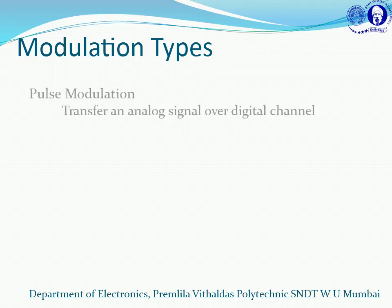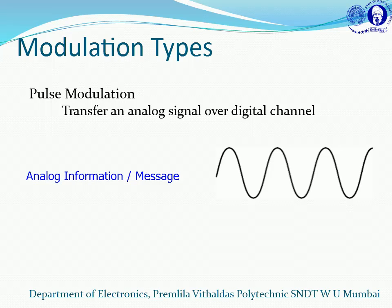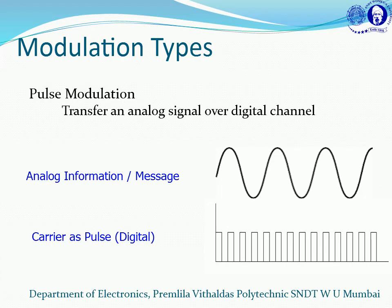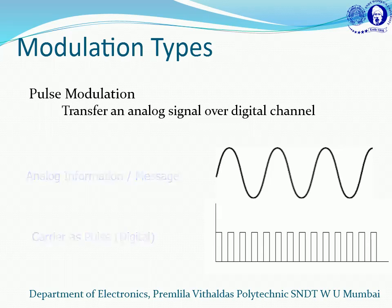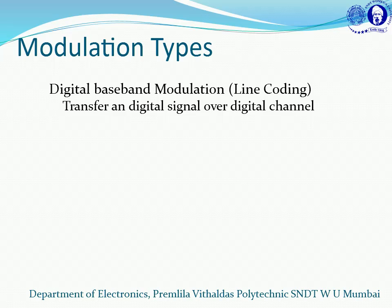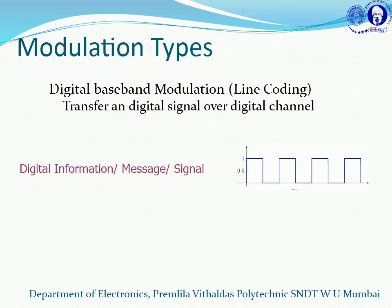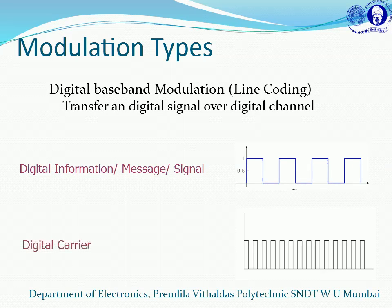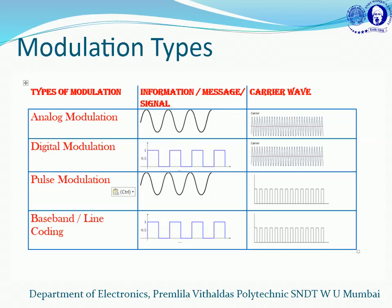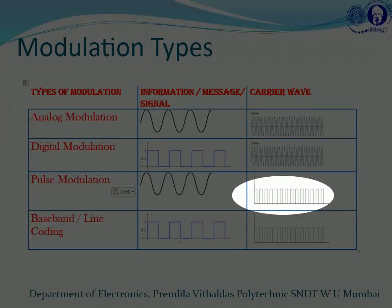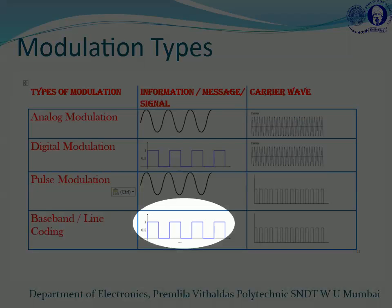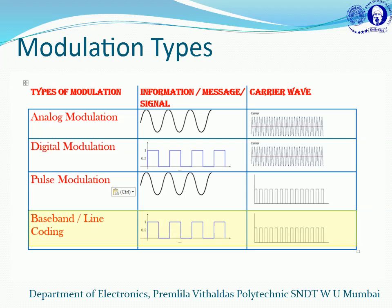The next type is pulse modulation, where we have an analog signal and the carrier pulses are digital — we call it pulse modulation, which is also covered in our syllabus. The last type is digital baseband modulation, also referred to as line coding, where both the information and the carrier are digital. To summarize: analog signal and analog channel — analog modulation; digital information and analog channel — digital modulation; analog signal and digital channel — pulse modulation; both digital — digital baseband modulation.